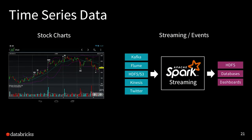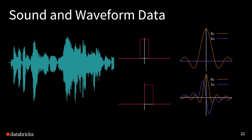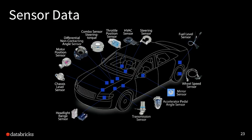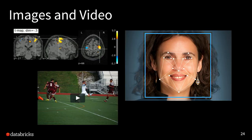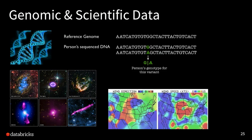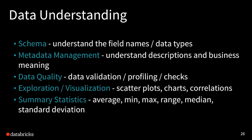Geolocation data. Time series data, which is usually done for stock charts or IoT applications — a good application for Spark Streaming. Sound and waveform data, where you're collecting data from sensors — in this case, the various sensors on a car for self-driving. Images and video, as well as genomic data. The key is you want to first understand the data: understand the descriptions, business meaning and value, the quality of your data, and explore and visualize it as well as do summary statistics.